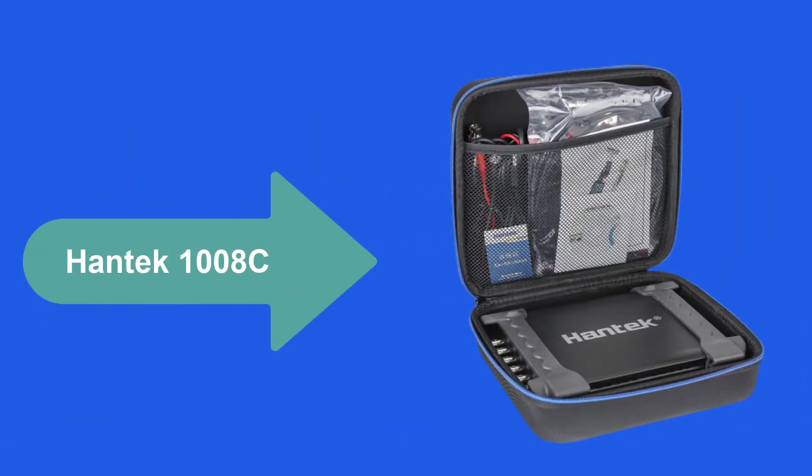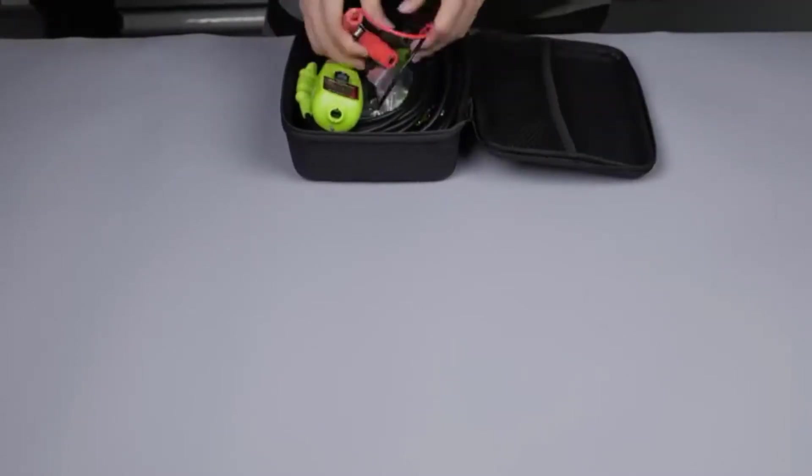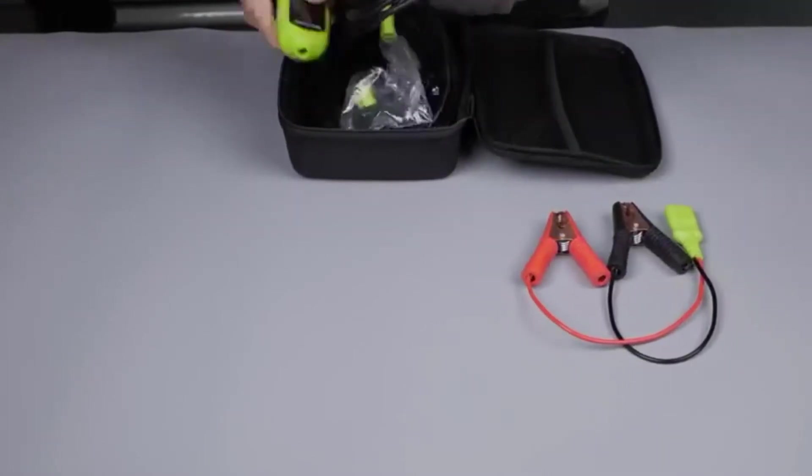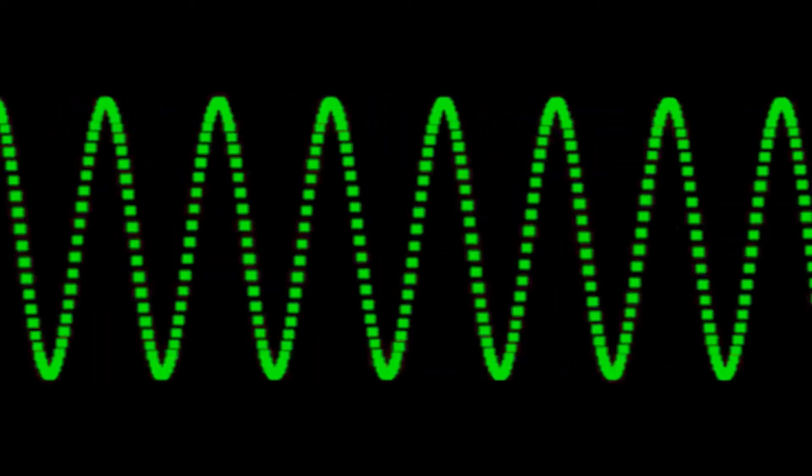At Number 1, Hantec 1008C. For those who need the best automotive oscilloscope with many channels, the Hantec 1008C is a great option. It's a PC-based oscilloscope with a programmable waveform generator, ideal for most home automotive applications.